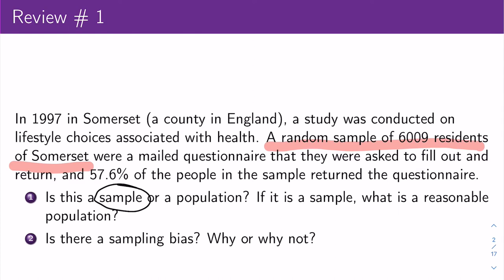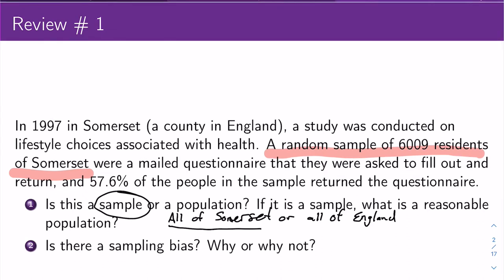Since this is a sample, what might be a reasonable population to generalize to? It might be all of Somerset, or it could be all of England. It really depends on how representative Somerset is of all of England, but at a minimum you should be able to talk about all of Somerset County and possibly all of England. To protect against sampling bias, you collect a random sample — which was done here, so there is no sampling bias.